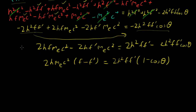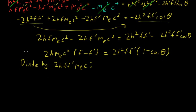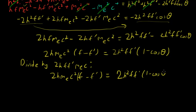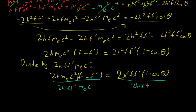The next step: we're going to divide both sides by 2hf·f'·mₑc. The reason why will be apparent once we solve it. So rewriting: 2h · mₑc² · (f minus f prime) equals 2h²ff' · (1 minus cos θ). Dividing both sides by 2h·f·f'·mₑc — the 2's cancel, the h's cancel, the c's cancel, the f's cancel — and we get what we have left.